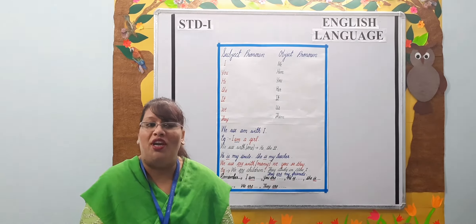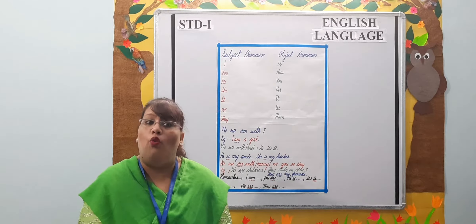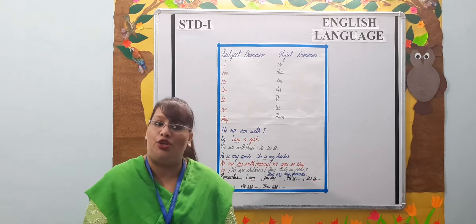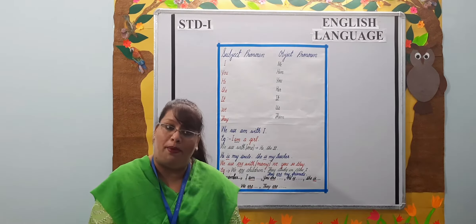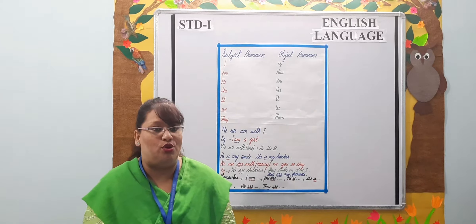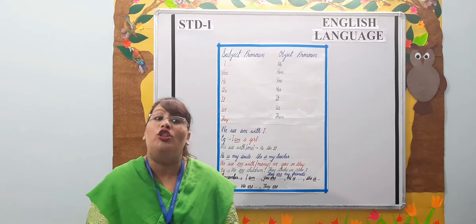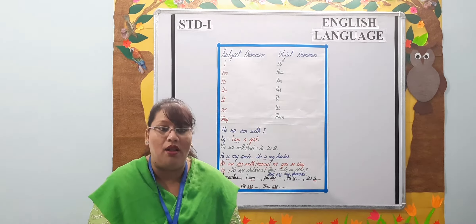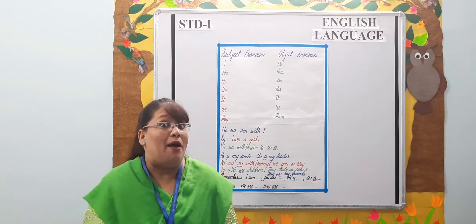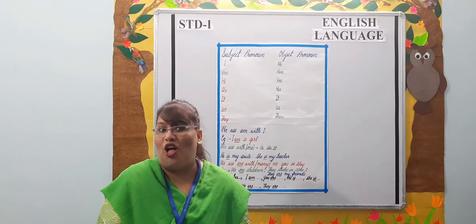I, you, he, and she are used for one person. We is used for more than one person. They is used for more than one person, animals, or things. For example: They are my parents. They are my pet dogs. They are balls.